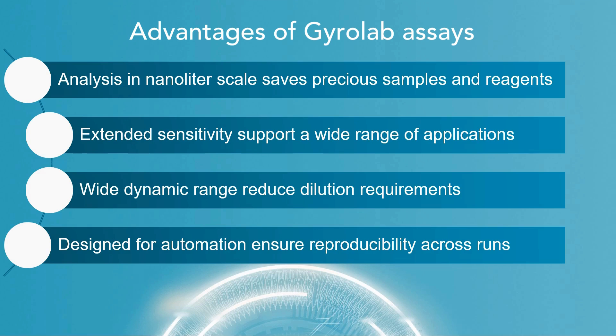Gyrolab's sensitivity often exceeds that of traditional ELISA methods. This increased sensitivity ensures that even low-abundance proteins can be detected and quantified with precision. In addition, Gyrolab has a wider dynamic range.